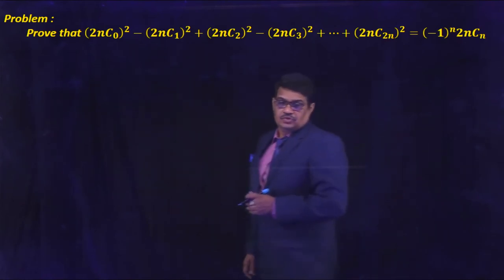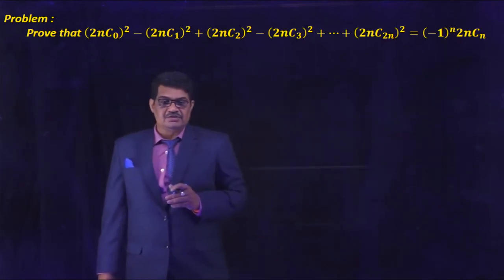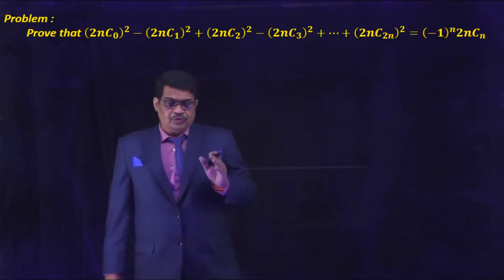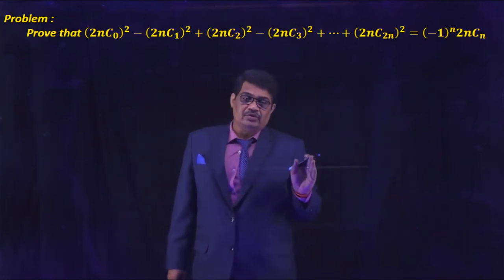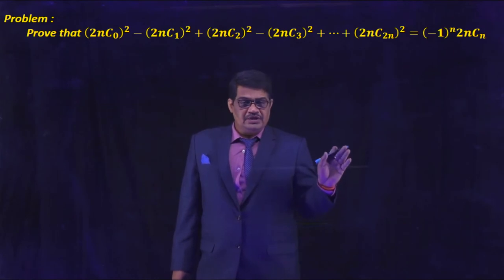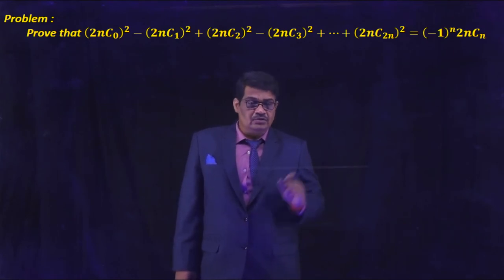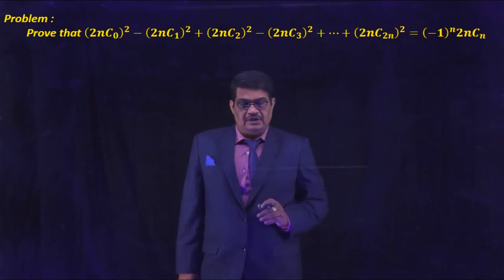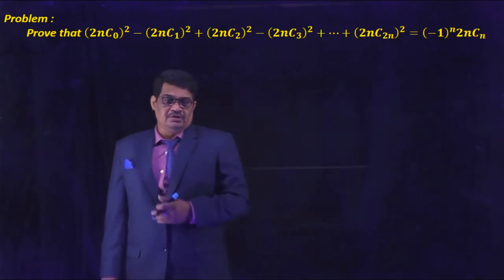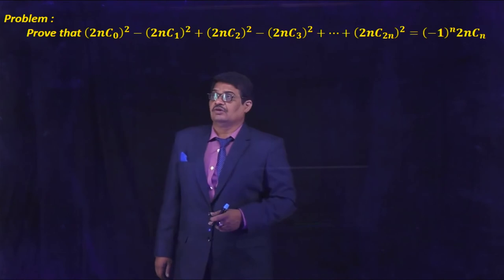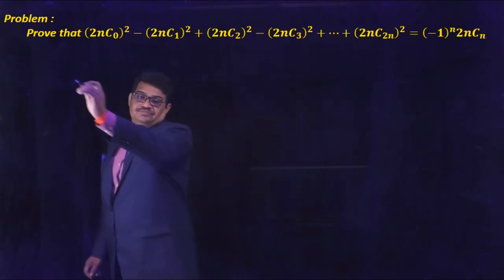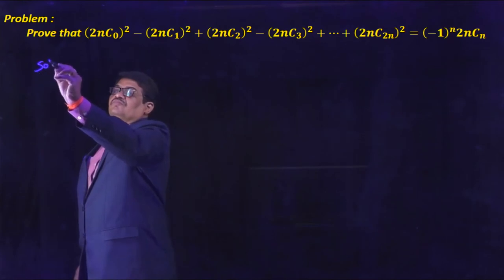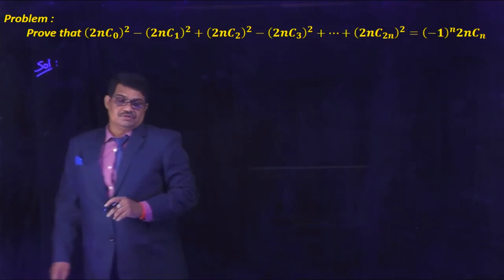Prove that (2NC0)² - (2NC1)² + (2NC2)² - (2NC3)² + ... + (2NC2N)² = (-1)^N × (2N C N).